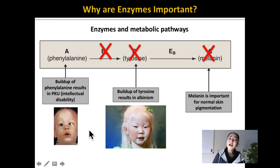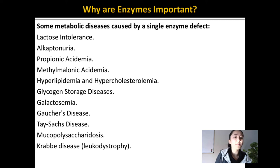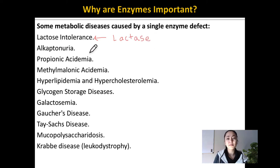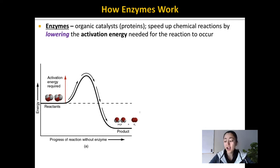The interesting thing about phenylalanine is that we get this amino acid strictly from our diet. So if we can regulate the diet of individuals with PKU, we can actually limit the effects of this disorder. Here are just a list of some other metabolic diseases caused by just a single enzyme defect — for example, lactose intolerance. Many people can't break down lactose, which is the sugar in milk, because they can't produce the enzyme lactase, which is necessary for breaking down lactose.